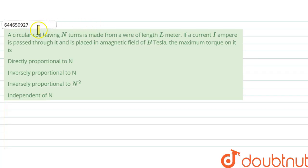The question says that a circular coil having N turns is made from a wire of length L meters. If a current I ampere is passed through it and is placed in a magnetic field of B Tesla, the maximum torque on it is what?